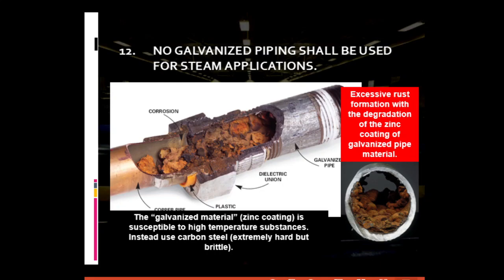The zinc coating of galvanized piping is susceptible to high temperature substances. Instead, make use of carbon steel, which is extremely hard. However, carbon steel is brittle, so it can break easily. For general piping requirement number thirteen: no piping should be used that is easily corroded by the material passing through. Proper recognition of the kind of fluid to be conveyed is necessary to determine the appropriate piping material. If metallic pipes are not possible due to the corrosive nature of the fluid, thermoplastics can be used, as they are capable of withstanding both high pressures and high temperatures.